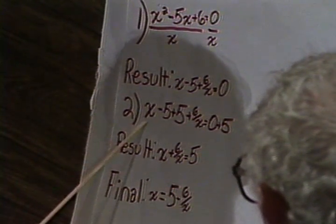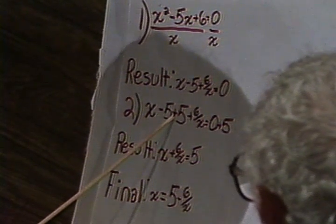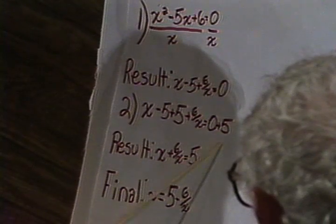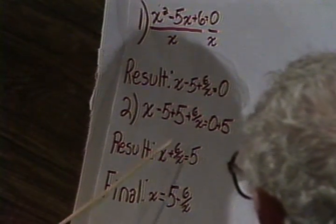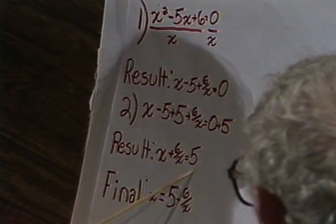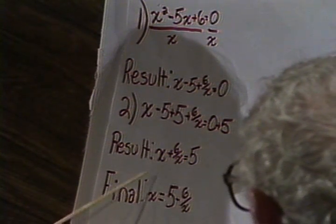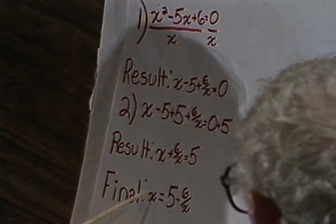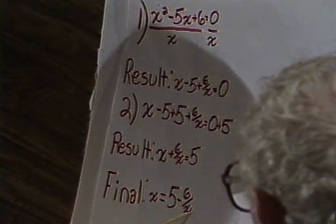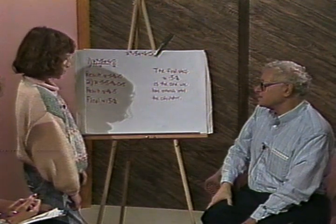Then you add 5 to both sides, and you end up with x plus 6 over x equals 5. Then the final step was to make x equal to 5 minus 6 over x — you subtracted 6 over x from both sides.